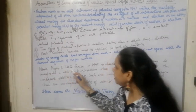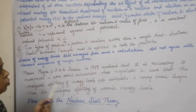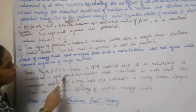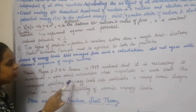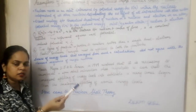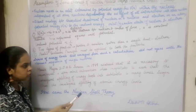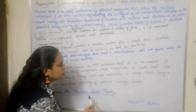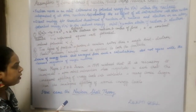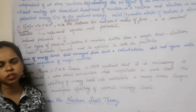Maria Goeppert Mayer and J.H.D. Jensen in 1949 realized that in addition to a potential, we should also incorporate spin-orbit interactions to determine the energy levels. It was important to incorporate spin-orbit interaction whose magnitude causes the splitting of energy levels into sub-levels through LS coupling. Those sub-levels are quite more numerous compared to the atomic energy levels seen in an electron, and when counting the total number of nucleons at the various levels, magic numbers were also obtained.